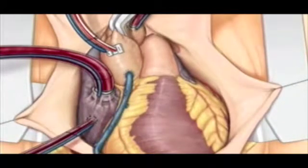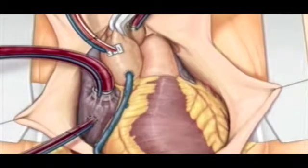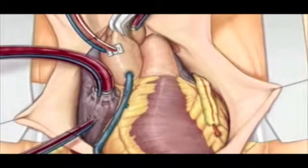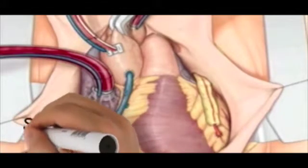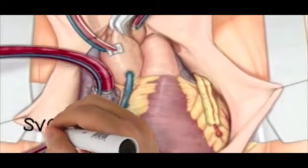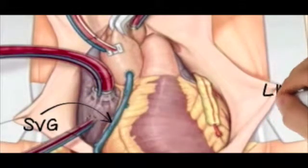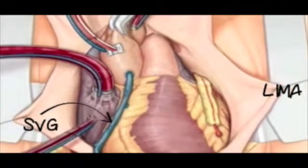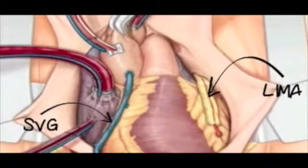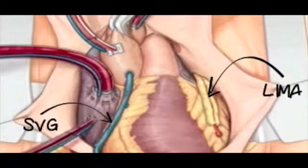We are now ready to attach our grafts. The most common grafts used are the saphenous veins and the internal thoracic arteries, also known as the internal mammary artery. The success of coronary artery bypass grafting is dependent on the long-term patency of the arterial and venous grafts.